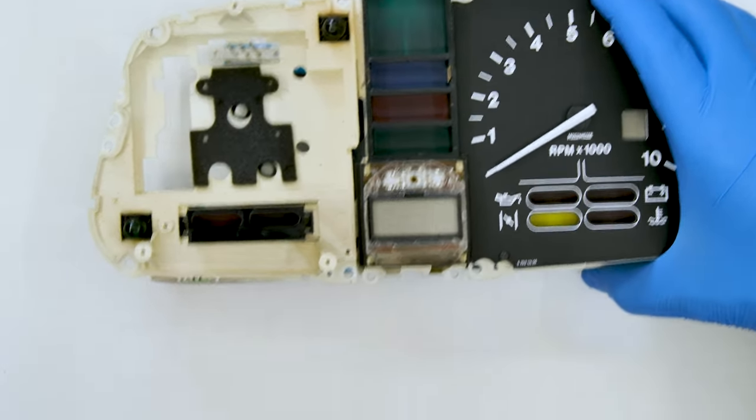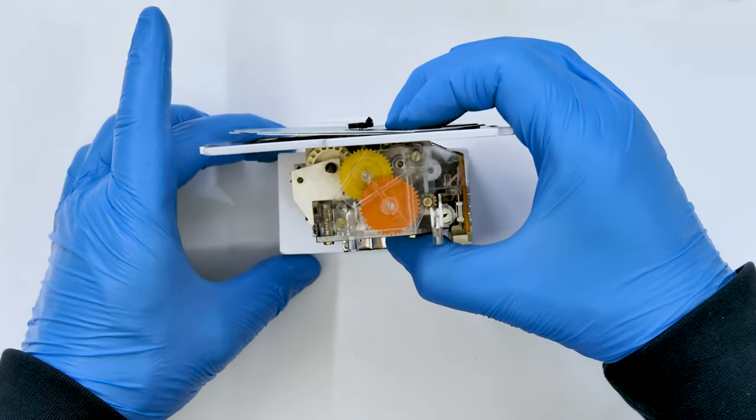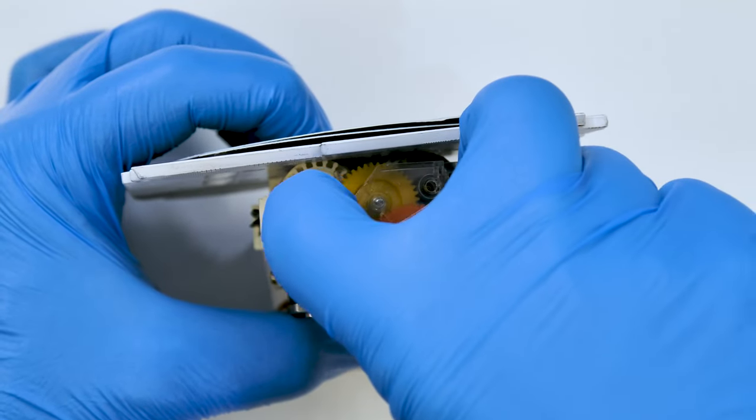Take out the gauge and place it on a support as shown. Remove the clear plastic part.